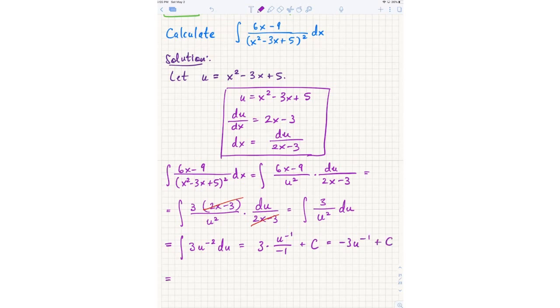It's not ln. Remember, ln is if this was u to the negative 1, the antiderivative would be ln. But since this was originally u to the negative 2, the antiderivative is actually just u to the negative 1, right?